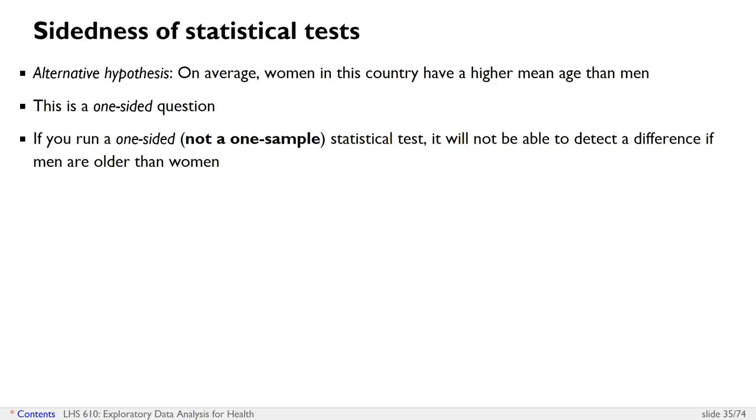So if you run a one-sided statistical test, you won't be able to detect a difference if men are older than women. You'll kind of treat that situation as being analogous to the situation if men are the same age as women. And so typically we don't run one-sided statistical tests. So if your statistical test tells you there's an option to run it one-sided or two-sided, it's good to understand that the default is usually two-sided tests. Because what we're really saying is that if our null hypothesis is that there's no difference, we want to know if we need to reject that hypothesis on either side, whether women have a higher age than men or whether men have a higher age than women.